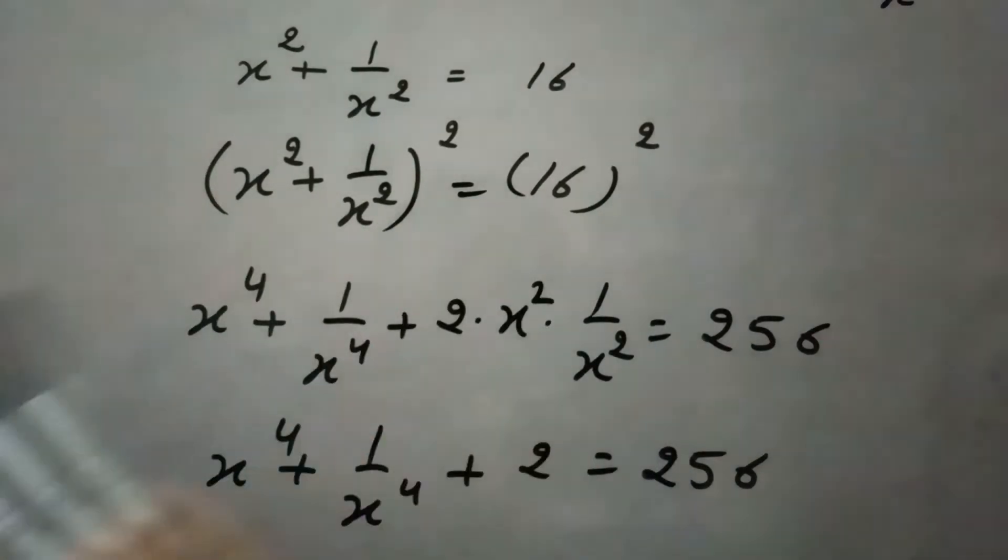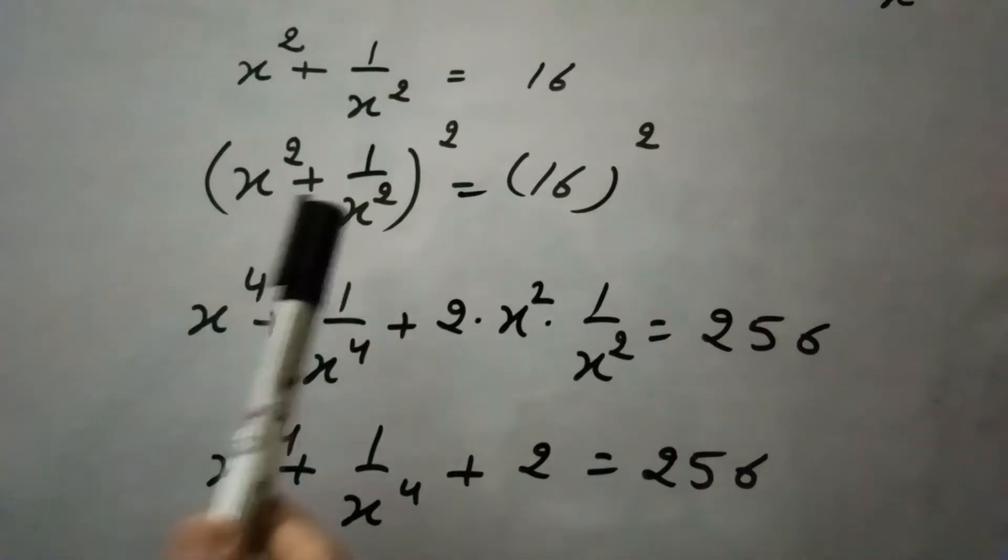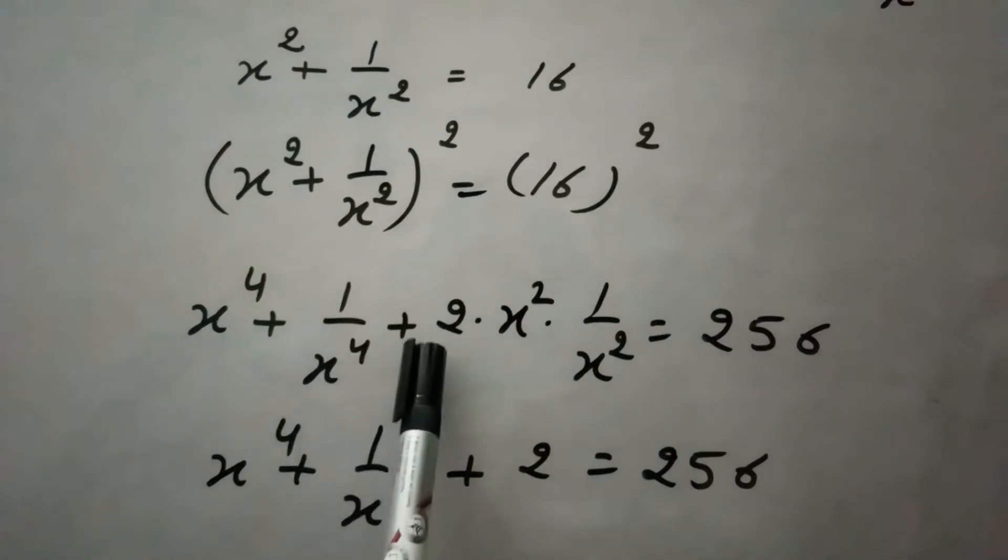By squaring both sides, we apply the formula (a + b)² = a² + b² + 2ab. So x² squared is x⁴, 1/x² squared is 1/x⁴, and 2 times x² times 1/x² equals 2.